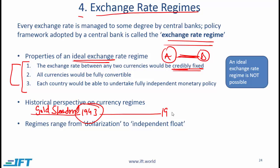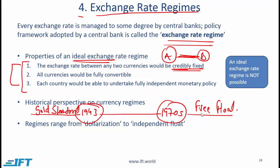That lasted until about the early 1970s. With the fixed parity system, there were issues with countries not being able to exert their monetary policy independently, along with inflation problems. After the 70s, most of the major economies moved towards a free float system. That's all I'll say at this stage.